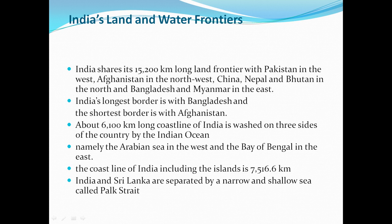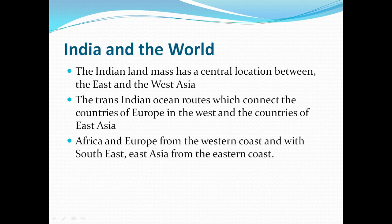India and the world: The Indian landmass has a central location between the east and the west Asia. The Trans-Indian Ocean routes connect the countries of Europe in the west and the countries of East Asia, Africa, and Europe from the western coast, and with Southeast Asia from the eastern coast.